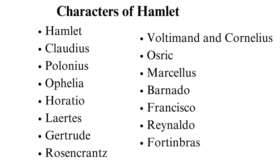Polonius, chief counsellor to the king, is a verbose and conventional old man. He pushes the theme of appearance and reality, as his pursuit of power makes it impossible to identify his true self. Ophelia, Polonius's daughter and Hamlet's girlfriend, shows honesty and wit but gets manipulated by the men around her.